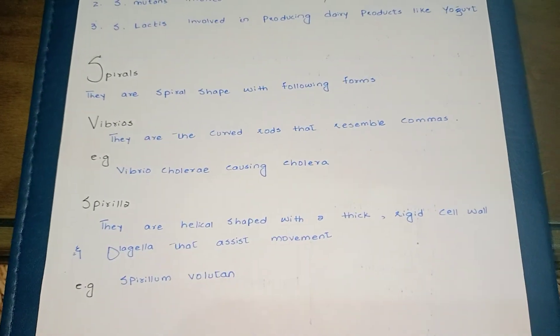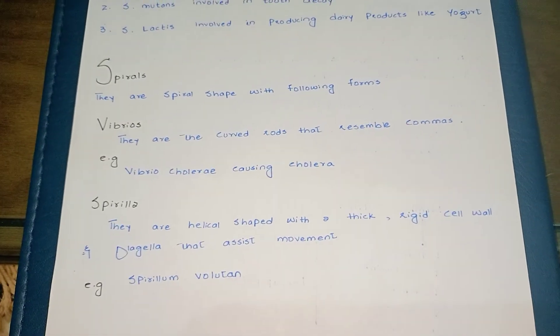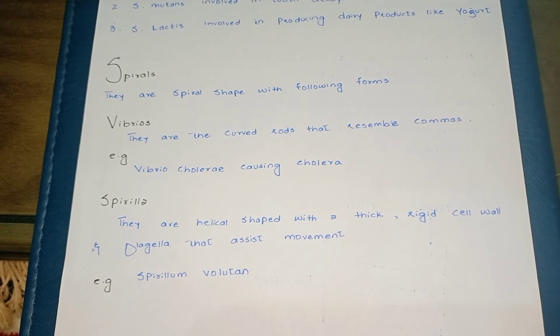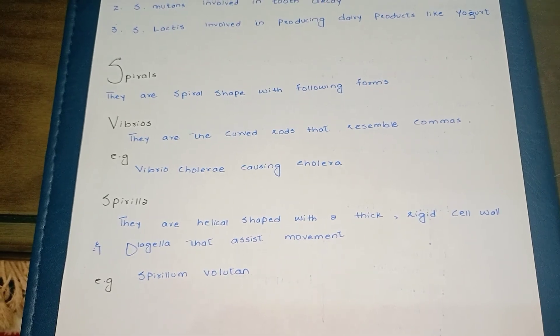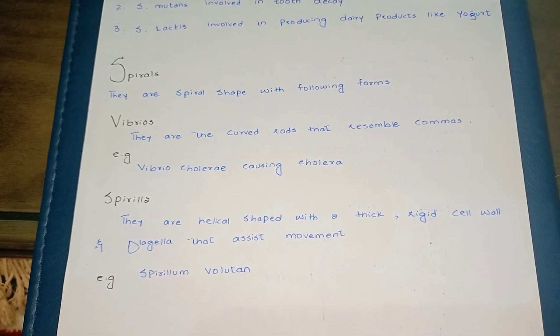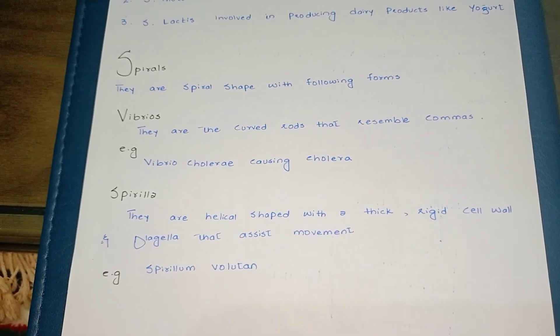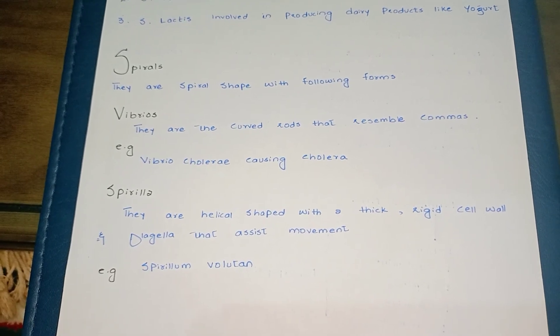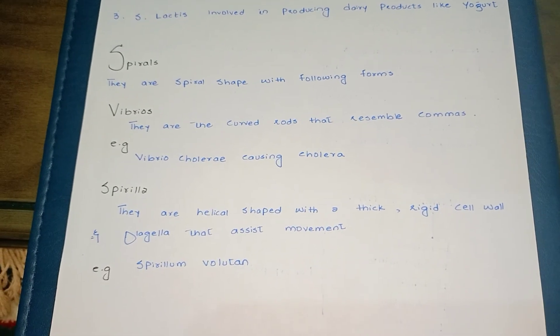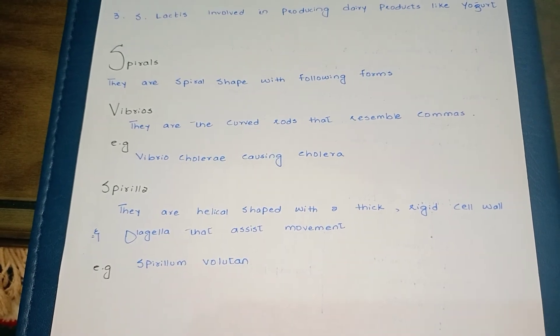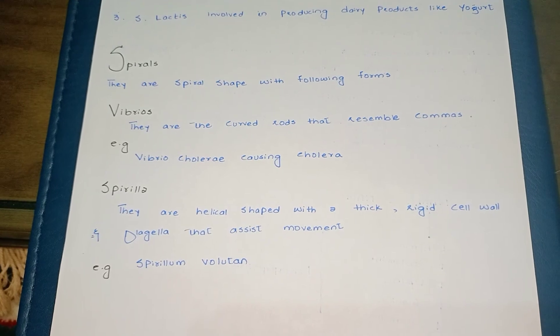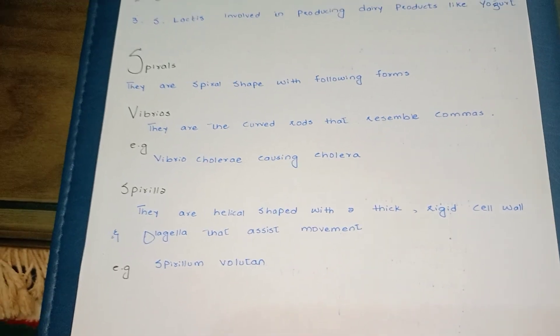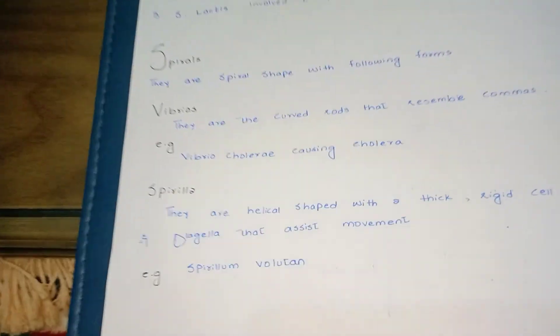Then we have spiral-shaped bacteria, like vibrios — curved rods — such as Vibrio cholerae, which causes cholera. Then there is the spirillum, which has a helical shape. These are the different shapes by which we classify bacteria on the basis of morphology.